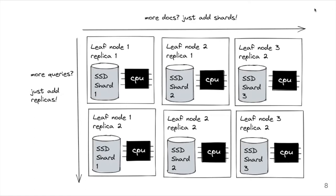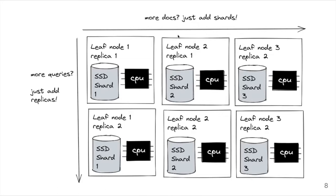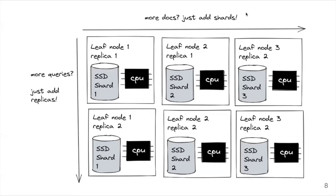Each node uses its own CPU, memory, and storage to work on the shard. This is great for fault tolerance — if you have multiple replicas, you can afford to lose one replica and still serve queries. The number of replicas per shard is called the replication factor. The minimum is usually two, very often three, more rarely four.